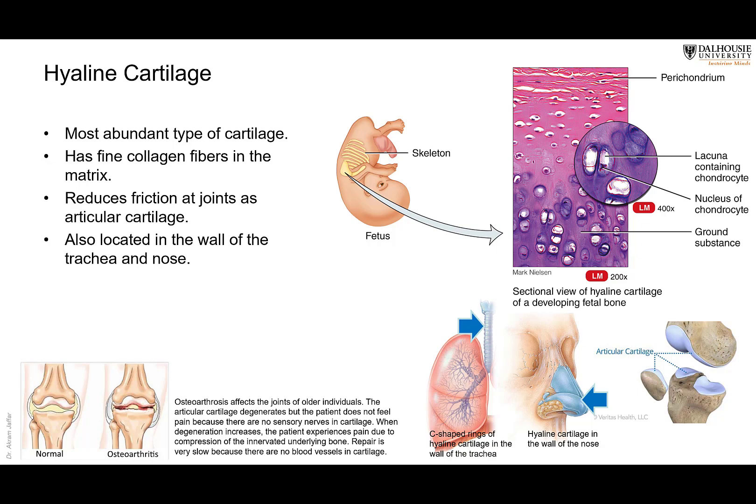Unfortunately, this cartilage is avascular and has no nerve supply. With aging, wear and tear in the joint cartilage results in its destruction — a condition called osteoarthritis or osteoarthrosis. The problem is that the patient is unaware of it until the destruction reaches the bone, which is sensitive. By that point, damage to the cartilage is extensive. Again, unfortunately, the cartilage is not easily repaired because it has no blood vessels or nerves.